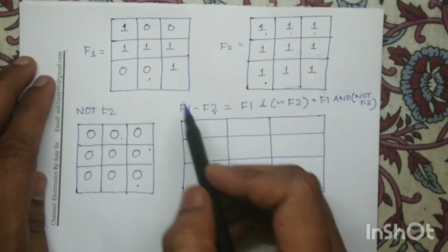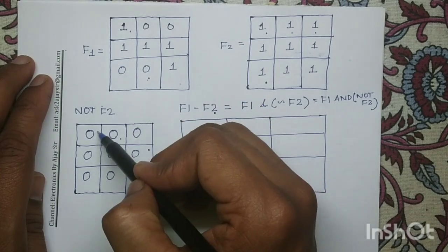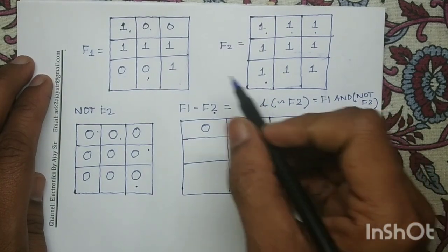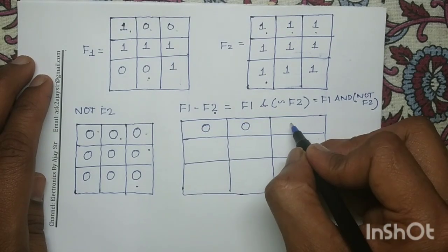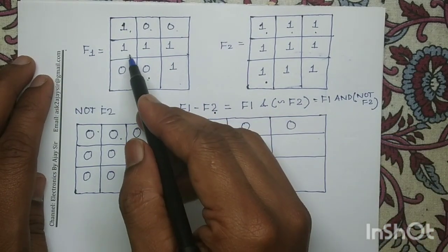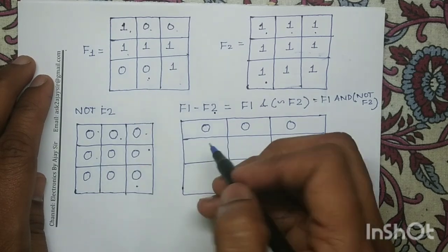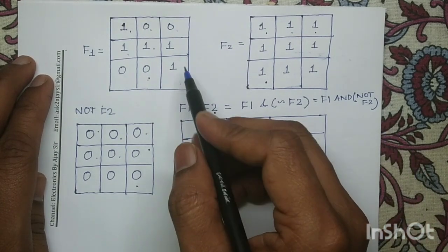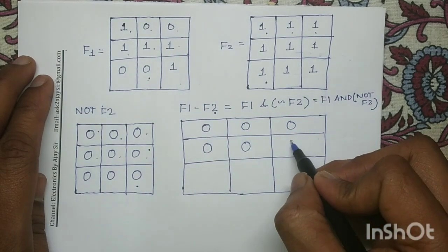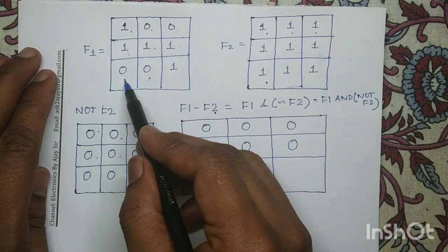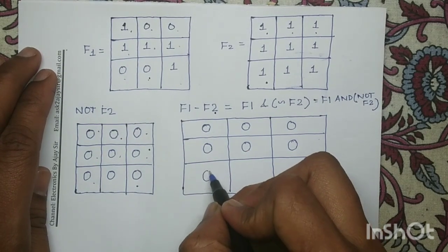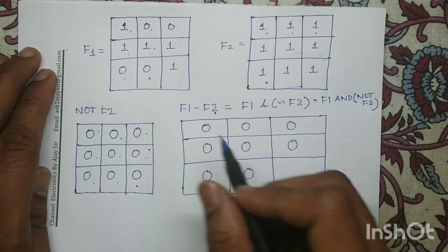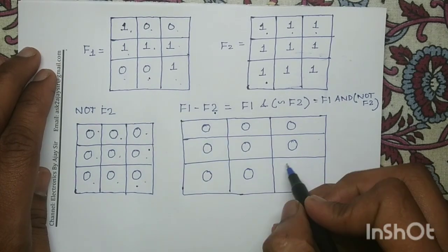Let us verify with some pixel values. 1 AND 0 gives 0. 0 AND 0 gives 0. 0 AND 0 gives 0. In the next row: 1 AND 0 gives 0, 1 AND 0 gives 0, 1 AND 0 gives 0. In the last row: 0 AND 0 gives 0, 0 AND 0 gives 0, and 1 AND 0 gives 0. All output pixels are 0.